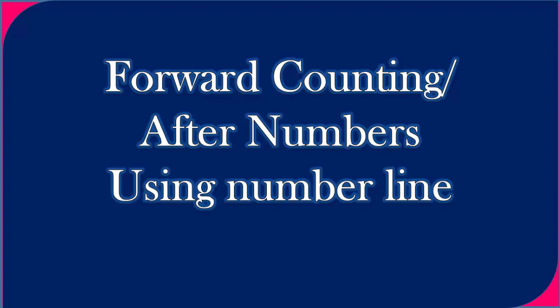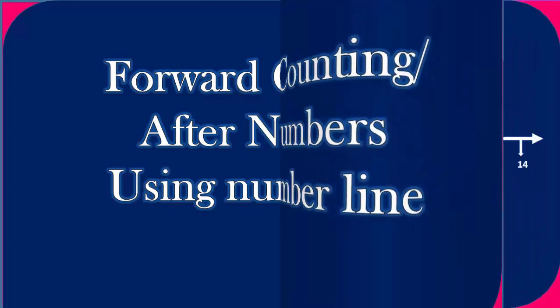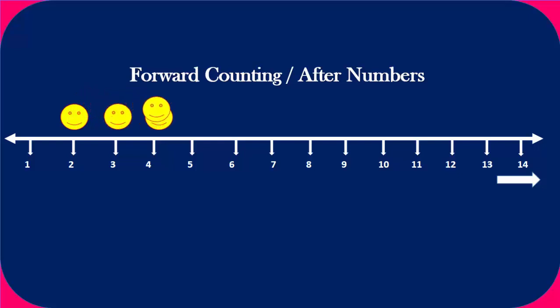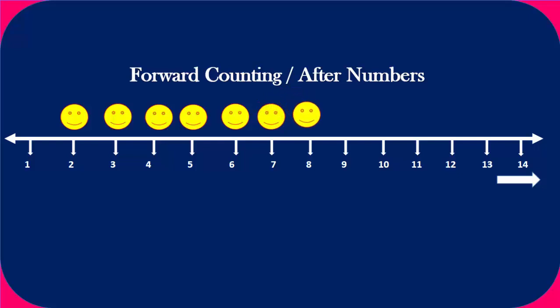Forward counting, or 'after' numbers, using a number line. In forward counting, we have to go on the right side of the number line. Here we can see that the smiley face is on number one. When we go forward or after, it will come on number two, then three, four, five, six, seven, eight, nine, ten.